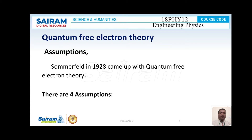There are four assumptions given by this quantum free electron theory. The first assumption is: distribution of energy in an electron gas obeys Fermi-Dirac quantum statistics, but it does not obey the classical Maxwell-Boltzmann statistical law.